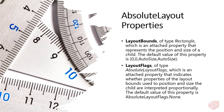Second is LayoutFlags of type AbsoluteLayoutFlags, which is an attached property that indicates whether properties of the layout bounds used to position and size the child are interpreted proportionally. The default value of this property is None. These properties are backed by bindable property objects, which means that the properties can be targets of data bindings and styled.